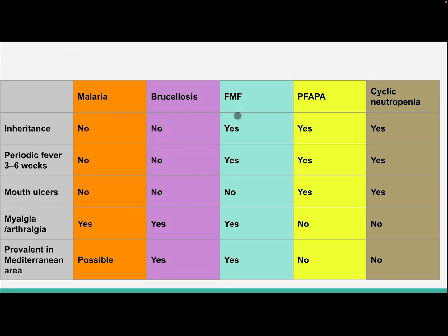Familial Mediterranean fever: there will be positive inheritance, periodic fever every three to six weeks, with myalgia and arthralgia, and association with the Mediterranean area. Periodic fever with aphthous stomatitis, pharyngitis, and cervical adenitis presents with inheritance, periodic fever every three to six weeks, and mouth ulcers. Cyclic neutropenia also presents with inheritance, periodic fever every three to six weeks, and mouth ulcers.